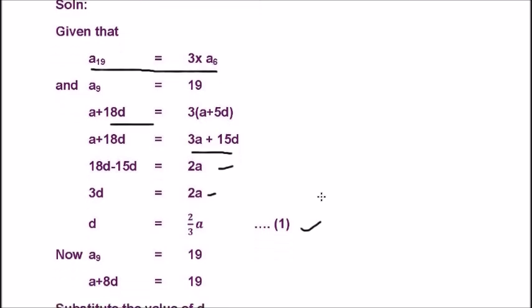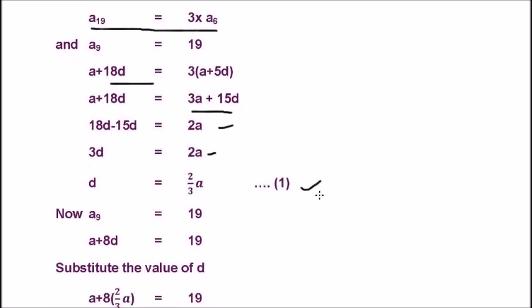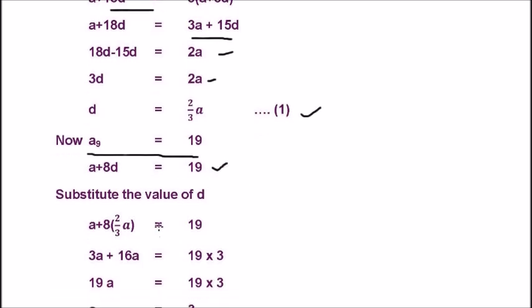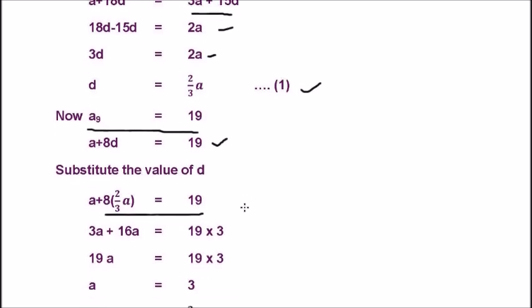Now, A9 is equal to 19. That is, A+8D is equal to 19. We know that, AN is equal to A+(N-1)D. Substitute the value of D from equation 1 to here. A+8×(2/3)A is equal to 19. That is, 3A+16A is equal to 19×3. That is, 19A is equal to 19×3. That is, A is equal to 3.